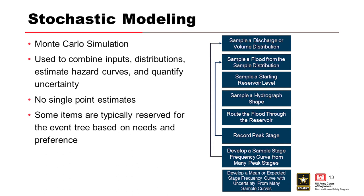In developing hydrologic hazard curves, we often use stochastic modeling. Modern computing power allows us to do this very quickly. At the Army Corps, we have a program called RMC RFA — you can develop those expected mean curves in about three to seven seconds, and for the full uncertainty with the 90% confidence interval, it might take up to 20 minutes. It used to take weeks to compute this type of stochastic analysis.